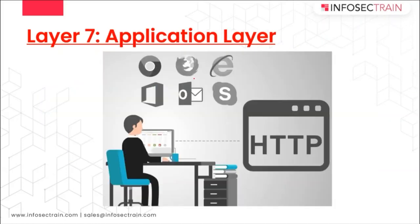Then we have the Application Layer — Layer 7, the topmost layer of the OSI model. It is the highest layer and is responsible for communicating between the application and the network. Some people say browsers are part of the Application Layer — they depend on the Application Layer but are not part of it. Anything you as an end user are experiencing will always be on the Application Layer. It is responsible for providing network services like file transfer, email, and web services to the end user, and for ensuring data is transmitted in a manner appropriate for specific applications.